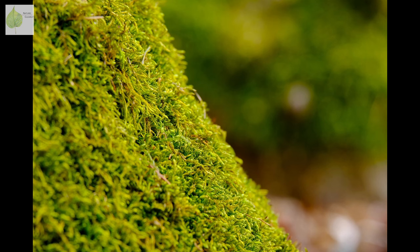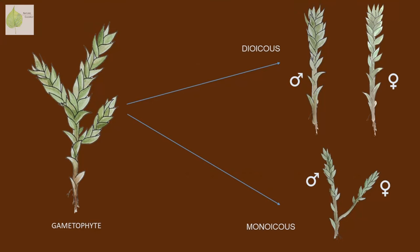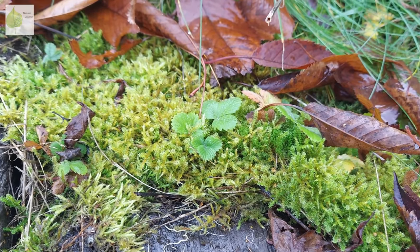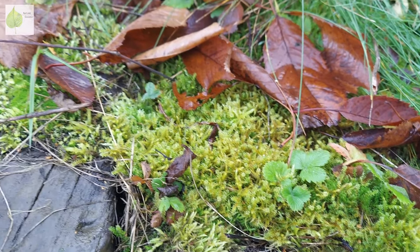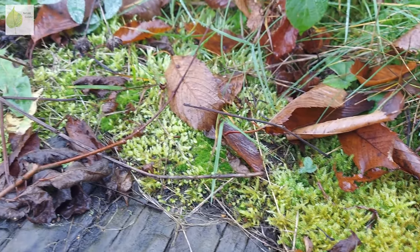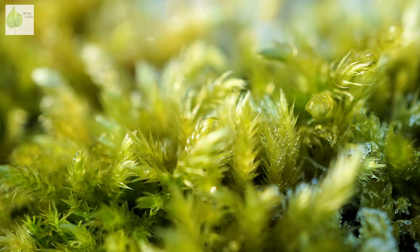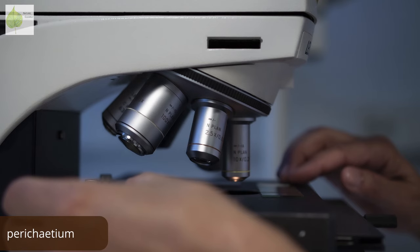Most moss species produce only male or only female sexual organs on one individual, meaning there are separate male and female plants — we call these species dioicus. However, mosses can also be monoicus, meaning that one individual produces both male and female sexual organs on separate stalks. Whether the moss is dioicus or monoicus is dependent on the species. A moss's sexual organs develop at the tip of a shoot or stem, usually hidden by a rosette of leaves called a perichaetium, and are not easily observable without a microscope.